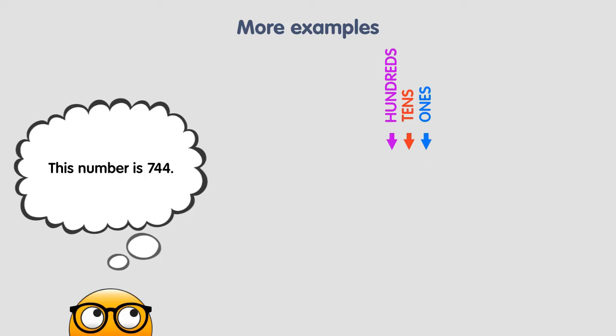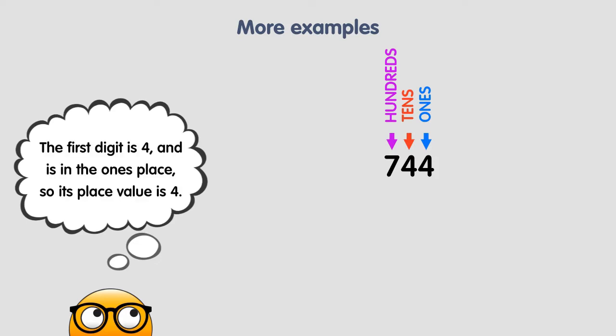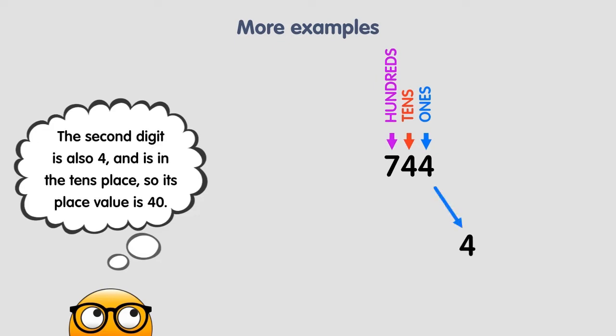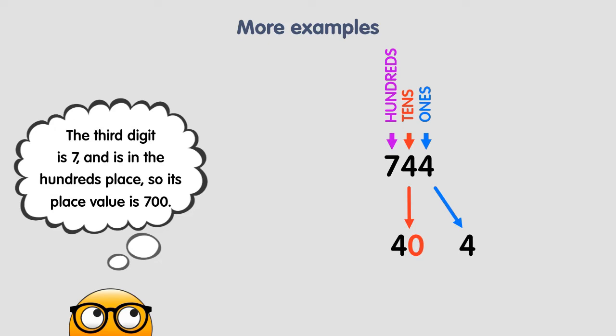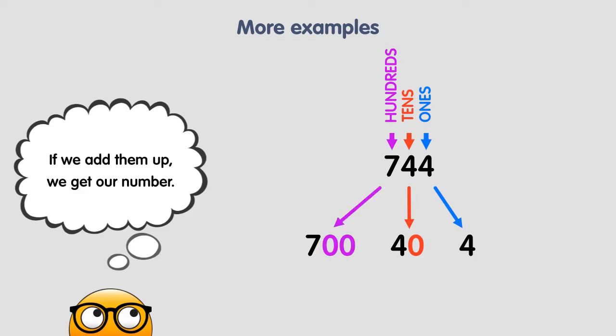This number is 744. It's a number of 3 digits. The first digit is 4 and is in the 1's place, so its place value is 4. The second digit is also 4 and is in the 10's place, so its place value is 40. The third digit is 7 and is in the 100's place, so its place value is 700. If we add them up, we get our number.